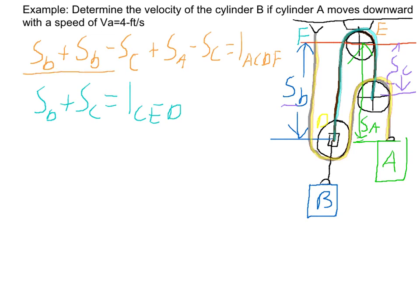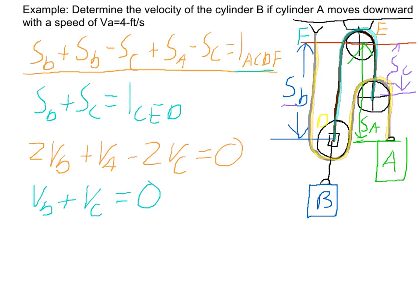Now if we differentiate this with respect to time, we'll get two V sub B plus V sub A minus two V sub C equals zero. And remember it equals zero because this is a constant. For the other one, V sub B plus V sub C equals zero because the length of the cord is a constant.